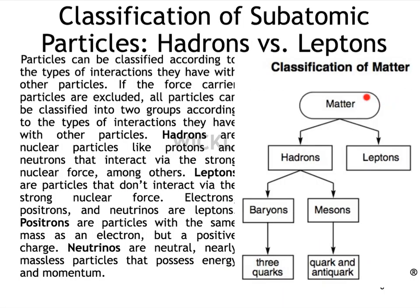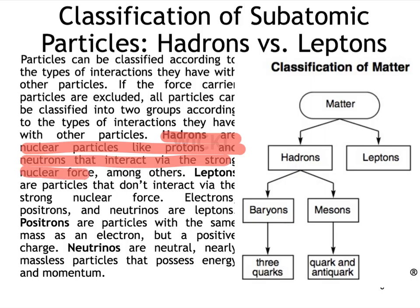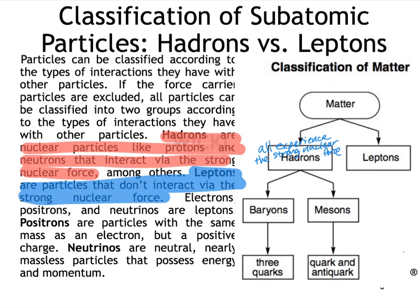You may have seen this diagram in your reference table — the classification of matter. We can think of all matter as being divided into two categories: hadrons and leptons. Hadrons are nuclear particles, such as protons and neutrons, that interact via the strong nuclear force. When you think hadrons, think protons and neutrons — there are some other particles, but they all experience the strong nuclear force. Leptons are the other general classification, and they are particles that don't interact via the strong nuclear force. Examples of leptons are electrons, positrons, and neutrinos.